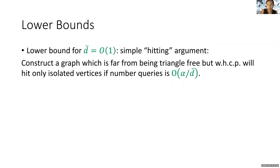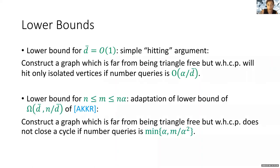For our lower bounds, we have two lower bounds. One lower bound is for d̄ which is O(1) — a simple counting argument. We construct a graph which is far from being triangle-free but with high constant probability it does not close a cycle unless the number of queries is at least min(α, m/α²).